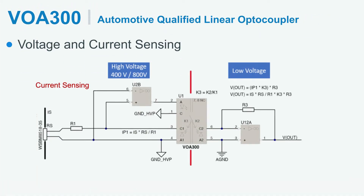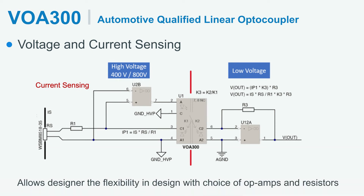An important question is: where is this linear optocoupler actually needed? This linear optocoupler is very well suited for accurately sending analog signals over the isolation barrier. In an automotive context, this part is typically applied for galvanically isolated current and voltage measurements in a battery management system. The schematic shown here is for the current sensing application in a BMS. Along with the VOA300, a couple of resistors and amplifiers are needed due to the relatively low currents coming out of a photodiode. At Vishay, we have also created reference designs for such applications — I encourage you to contact us for more details.